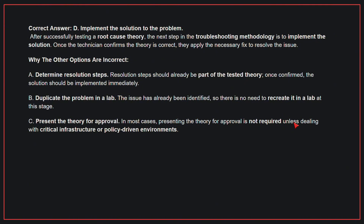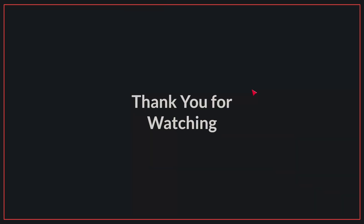Why the other options are incorrect: A, Determine Resolution Steps — resolution steps should already be part of the tested theory, and once confirmed, the solution should be implemented immediately. B, Duplicate the Problem in a Lab — the issue has already been identified, so there is no need to recreate it in a lab at this stage. C, Present the Theory for Approval — in most cases this is not required unless dealing with critical infrastructure or policy-driven environments. Therefore, the correct answer is D: implement the solution to the problem. We have come to the end of today's video. Please make sure to like and subscribe and stay tuned for the next video. Goodbye!